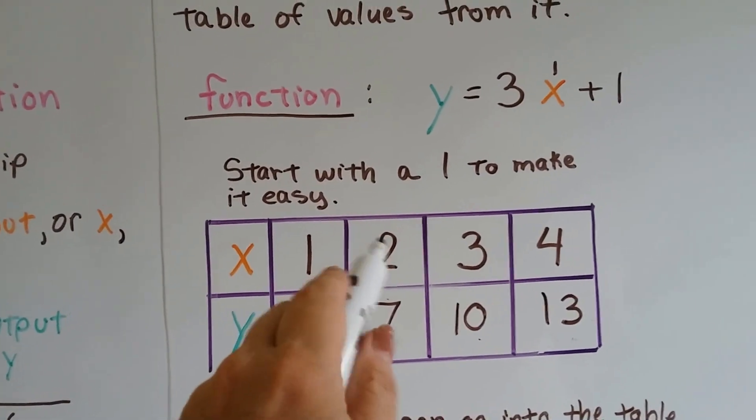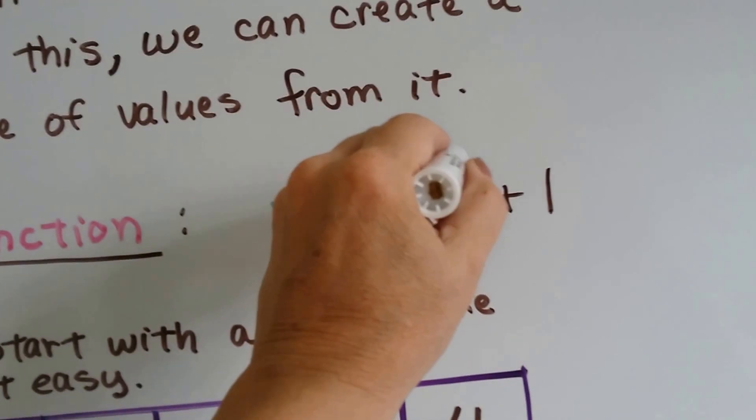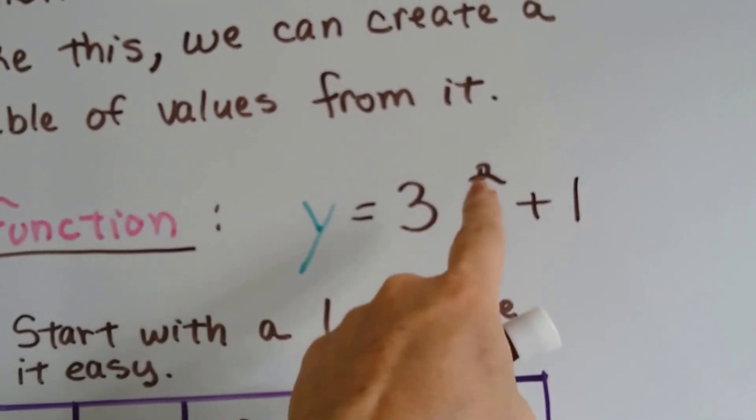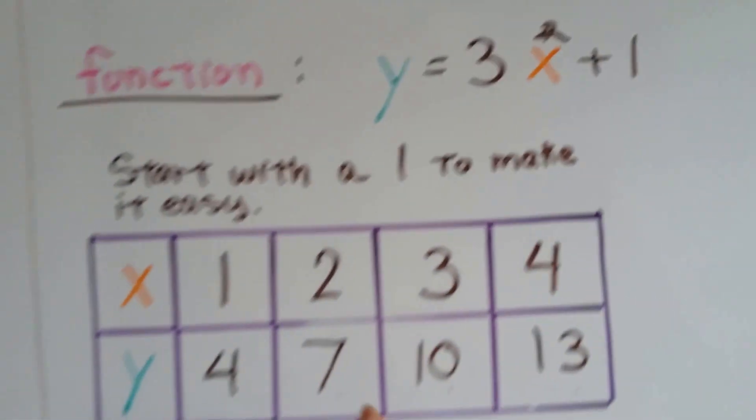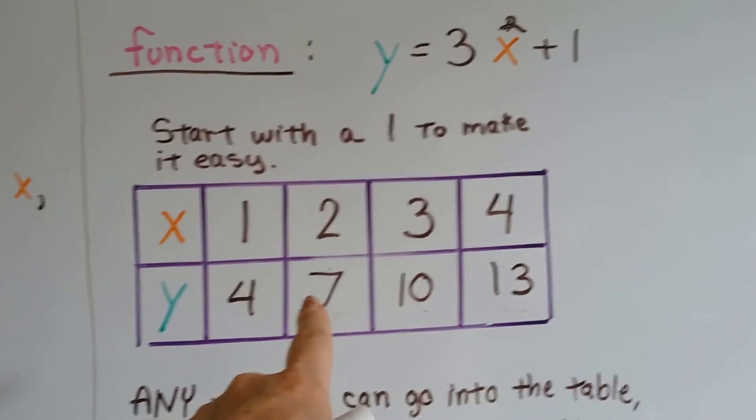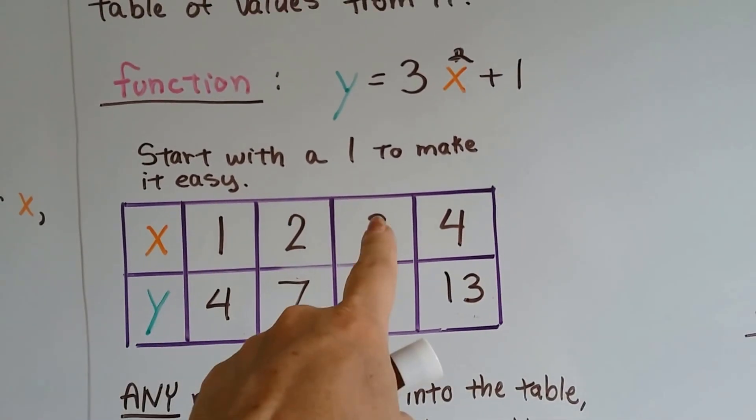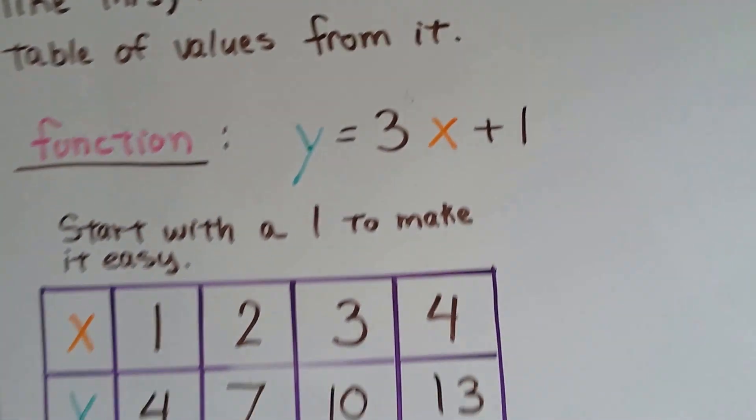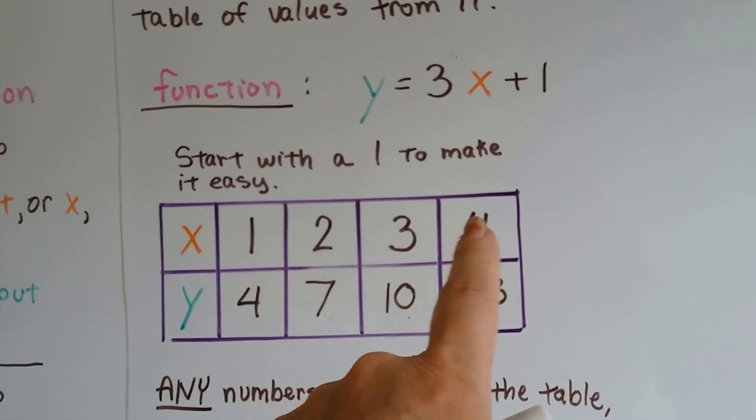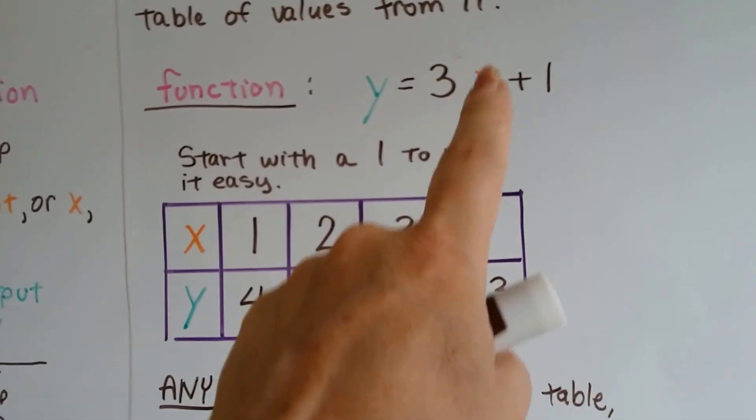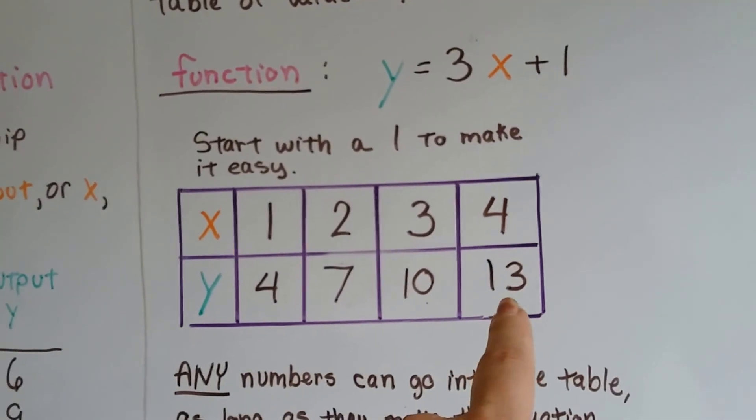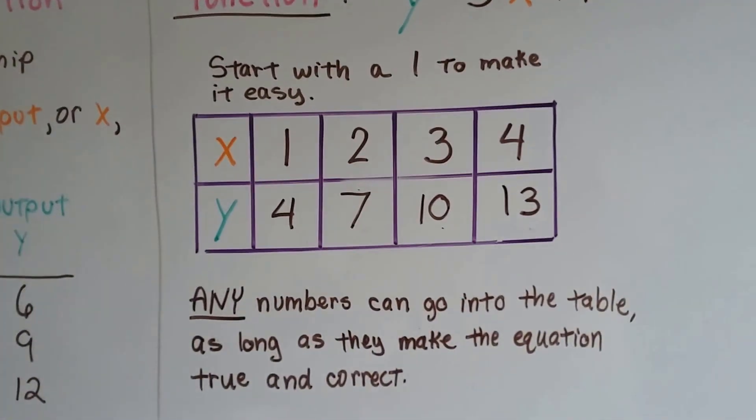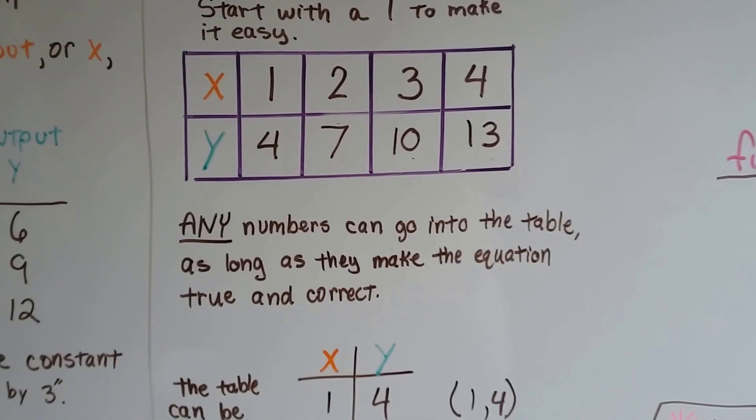If x equals 2, 3 times 2 is 6, plus 1 is 7, so y will equal 7. If x equals 3, then y will equal 10. 3 times 3 is 9, plus 1 is 10. And if x equals 4, 3 times 4 is 12, plus 1, y will equal 13. Any numbers can go into that table as long as it makes the equation true and correct.